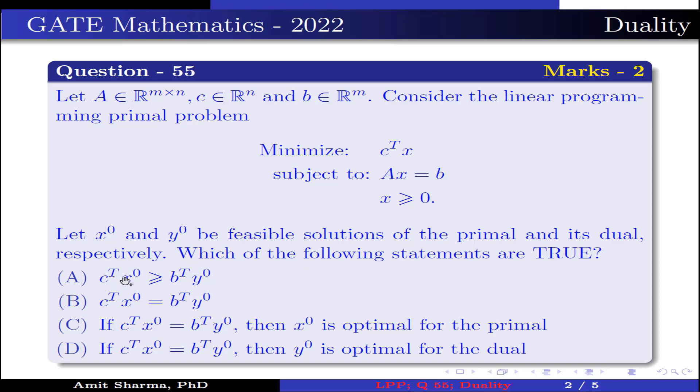Option A: C^T x0 ≥ b^T y0. Option B: C^T x0 = b^T y0.